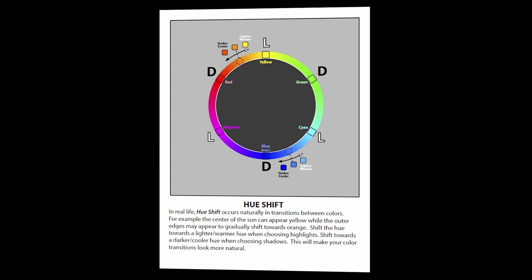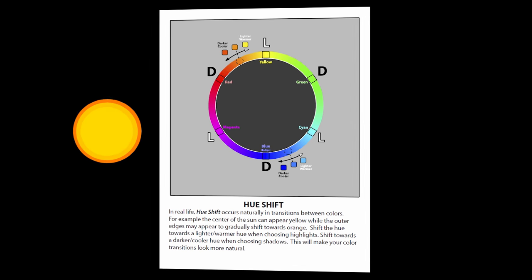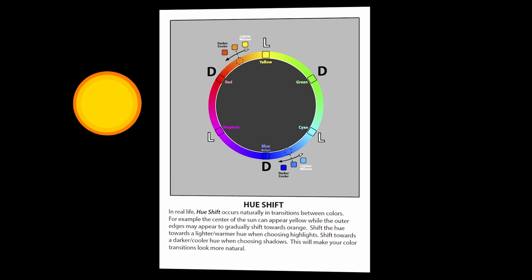The following page talks about hue shift. In real life, hue shift occurs naturally and transitions between colors. For example, the center of the sun can appear yellow, while the outer edges may appear to gradually shift towards orange.